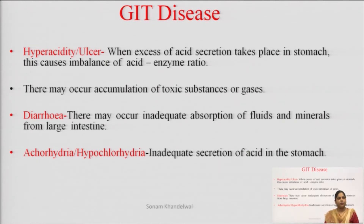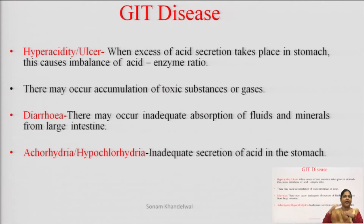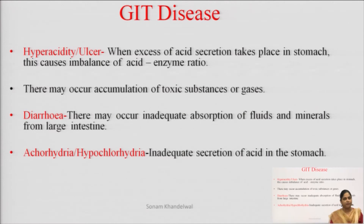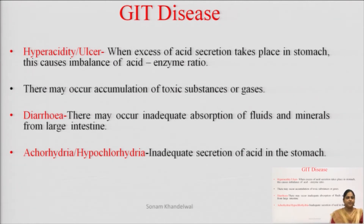Next is achlorhydria and hypochlorhydria. Hyper means above the normal level, hypo means below the normal level. Achlorhydria means when the acid is completely absent, or the secretion in the stomach is inadequate and doesn't meet the optimum level. This is why our disease is called achlorhydria or hypochlorhydria.